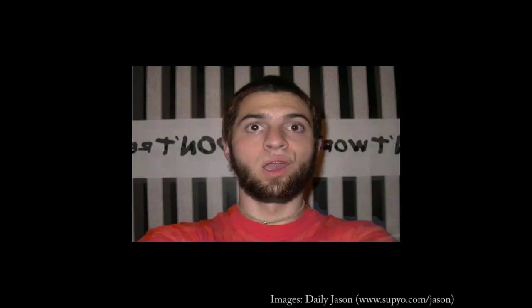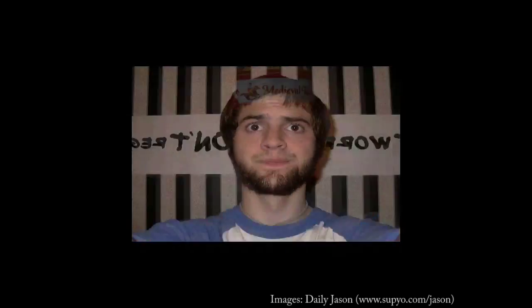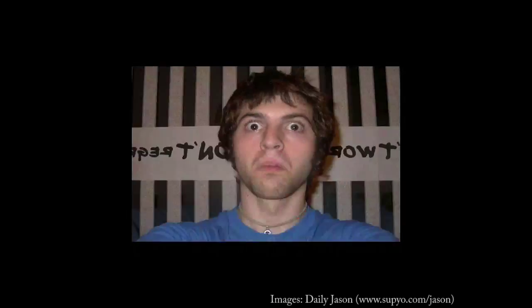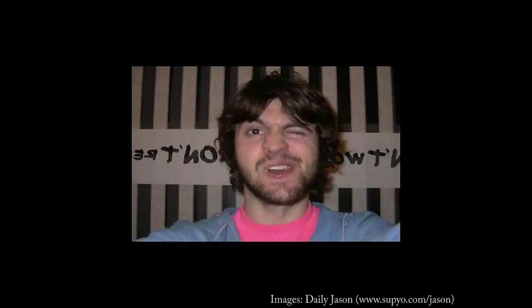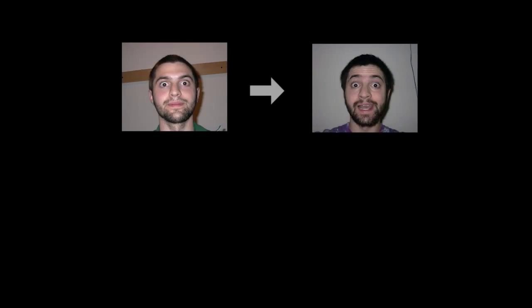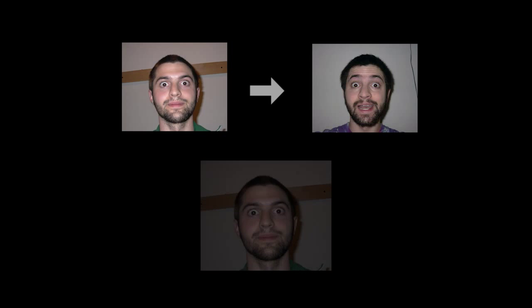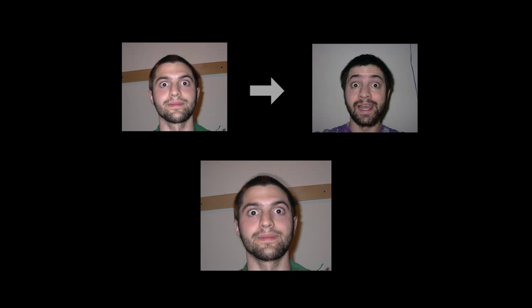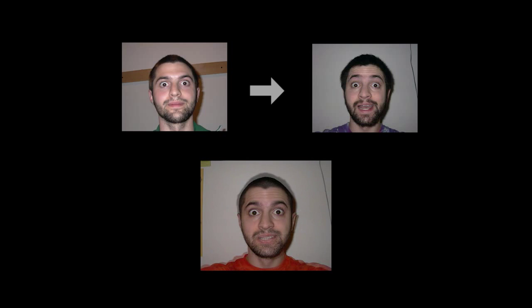We first consider time-lapse collections. In this case, the subject is photographed every day for four years. Playing these images in quick succession produces an interesting effect, although the motion can be rather jarring. With our technique, the user selects a start and end image. Based on these constraints, we use path planning to create smooth transitions over the dataset in real time.